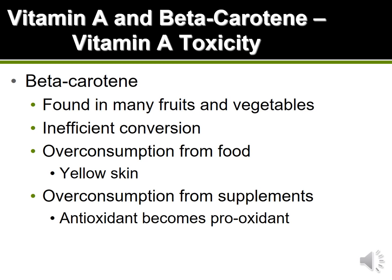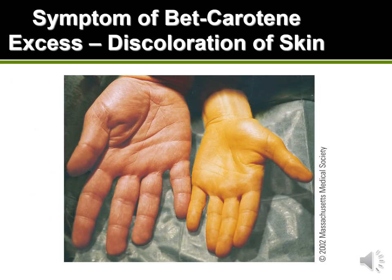If an individual was taking extreme amounts of beta-carotene supplements, what can happen is that the antioxidant function of beta-carotene actually becomes the opposite — it turns into what we call a pro-oxidant, which promotes free radical production instead of fighting free radicals. The most common presentation of excess beta-carotene is discoloration of the skin, since beta-carotene's orange-yellow pigment starts to show up in the individual's skin. This is a temporary condition that goes away once the large amounts of beta-carotene are stopped.